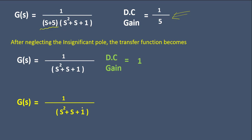To match the DC gain of 1/5, we add a 5 in the denominator. The correct approximated transfer function is G(s) = 1 / [5(s² + s + 1)]. The DC gain of the approximated transfer function is now 1/5, matching the original. The original was a third order system with three poles; after approximation we have two poles, making it a second order system — successfully lowering the order as required.